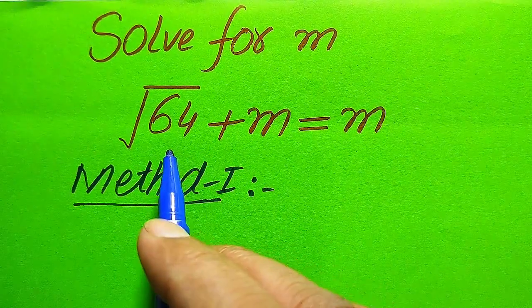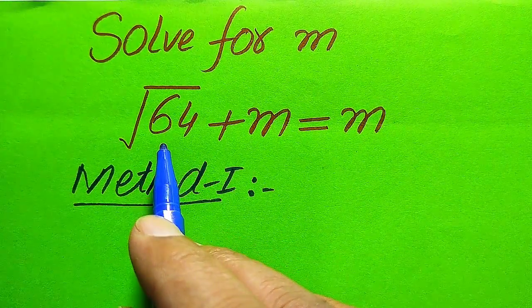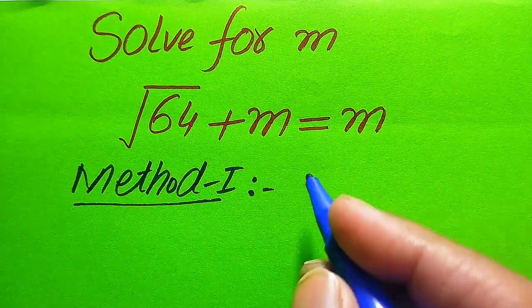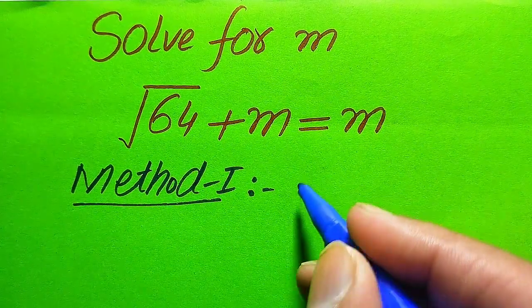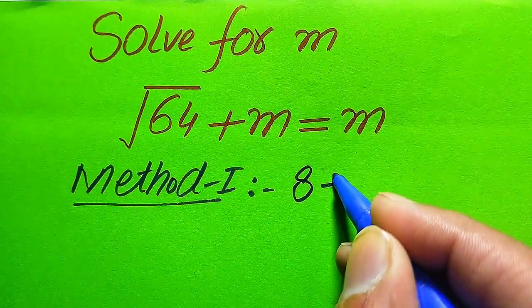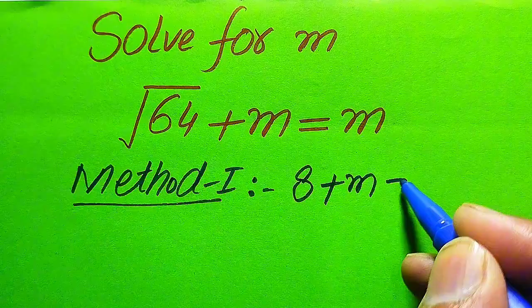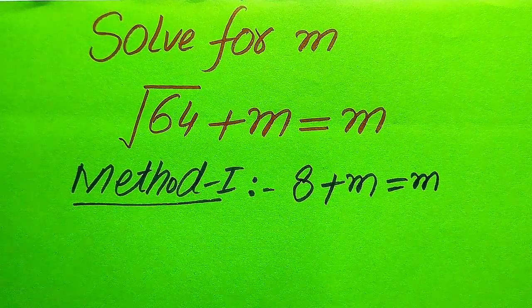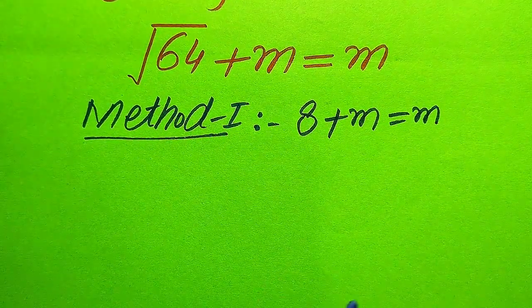In the first method, we see that this is the square root of 64, and we know that the square root of 64 is equal to 8. So the equation becomes 8 plus m equals to m.